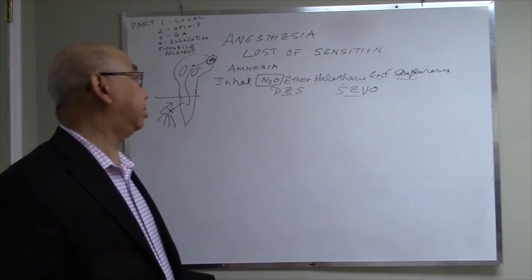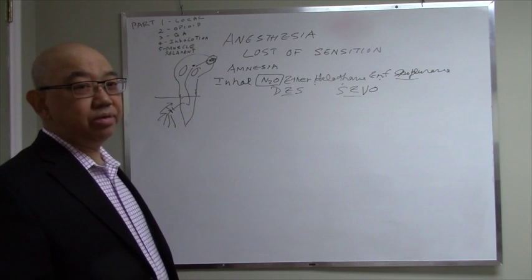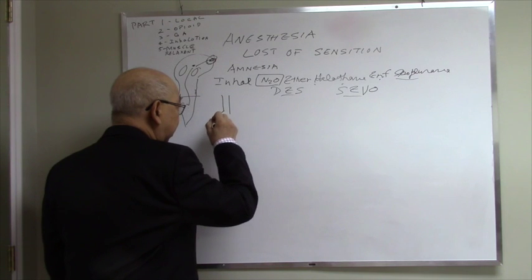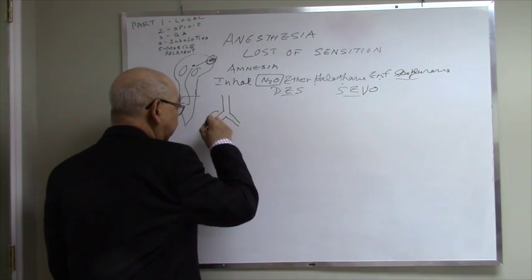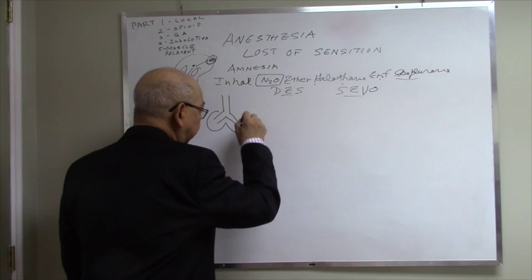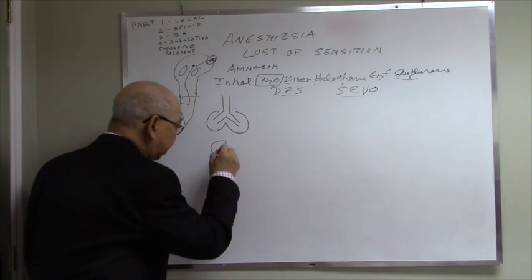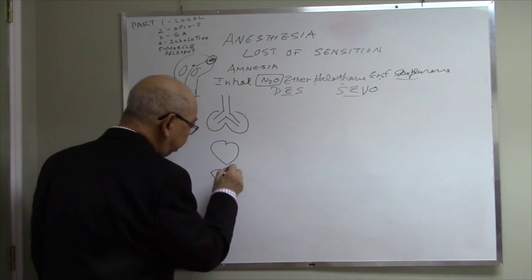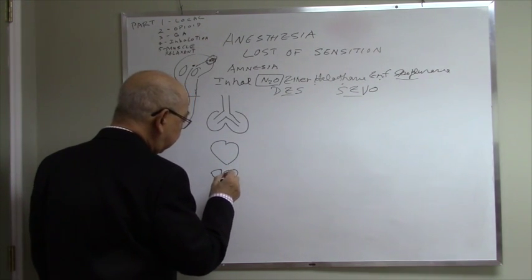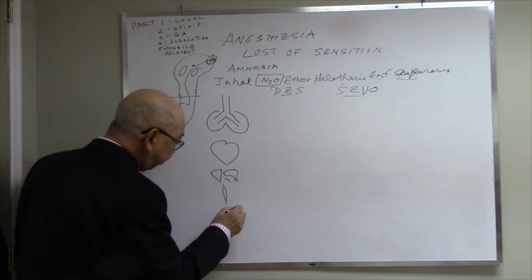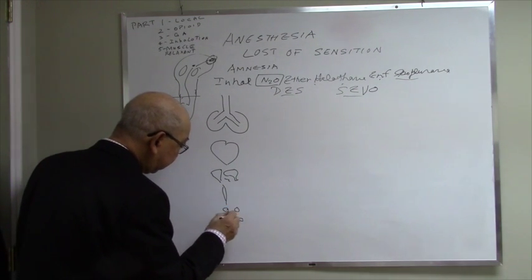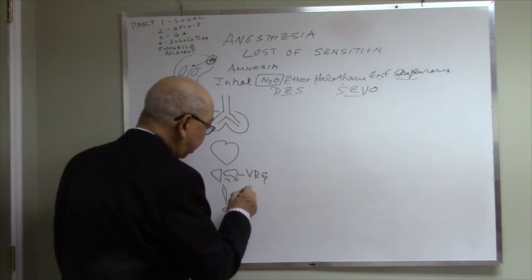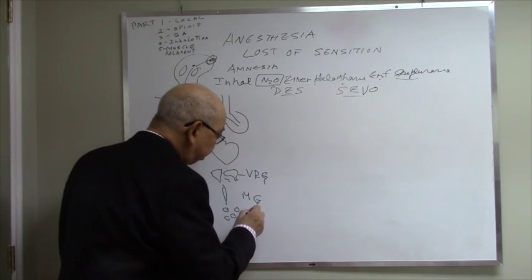How do you give it to the patient? By inhalation. Here is the lung, the heart, and your organs — liver, brain, and so on — then your muscle and your fat. These groups are called the vessel-rich group, the muscle group, and the vessel-poor group.